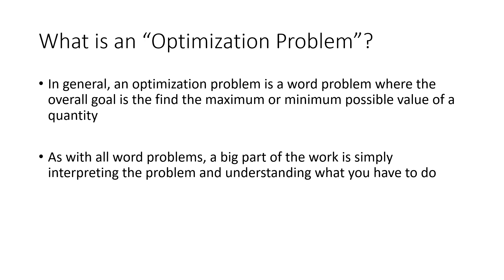In general, an optimization problem is a word problem where the overall goal is to find the maximum or minimum possible value of a quantity. We're optimizing by finding the best value for whatever the situation is. Sometimes best means maximum, like maximizing profits, but it also might be finding a minimum, like minimizing cost.